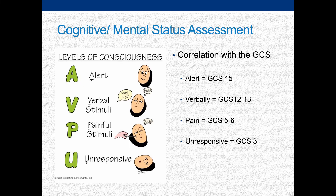Less commonly used, but perhaps a simpler, less detailed assessment of mental status is the AVPU. The AVPU scale correlates to distinct Glasgow Coma Scale ranges, as outlined below.